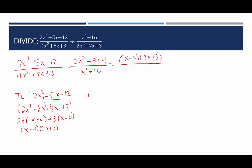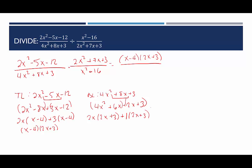So: 4x squared plus 6x plus 2x plus 3. Group the first two terms and pull out the GCF of 2x, leaving (2x plus 3). The GCF of the second group is 1, giving 1 times (2x plus 3). The two terms share a GCF of (2x plus 3), and the leftovers are 2x and 1. So the bottom left factors as (2x plus 3)(2x plus 1).